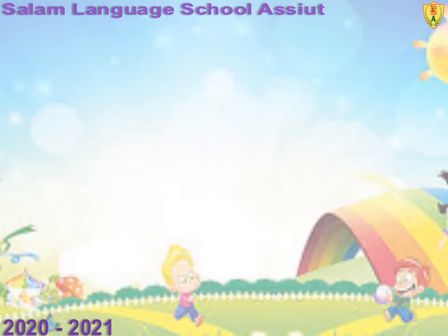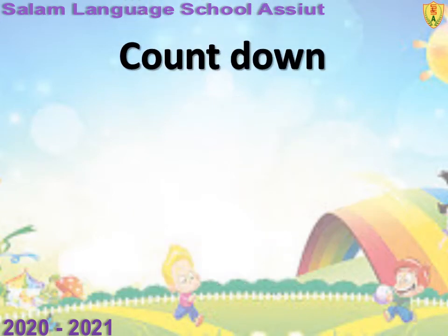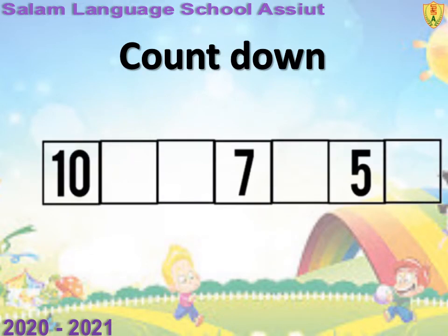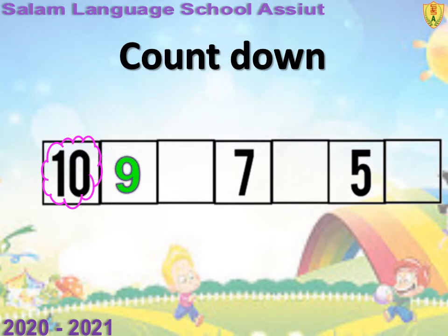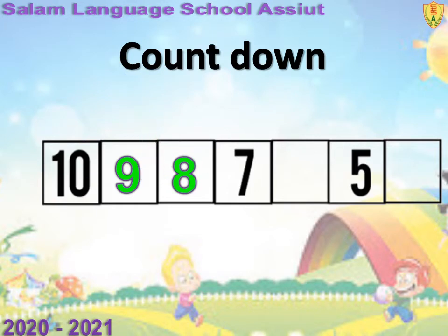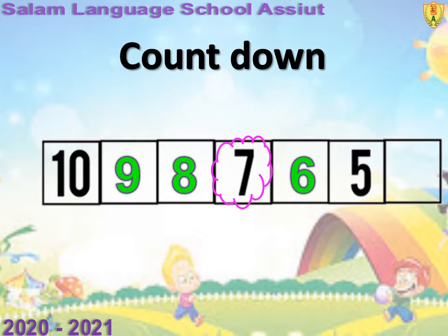عندنا أول اكسرسيز: number 10, space, number 7. معنى كده نهو استخدم الكاونت داو from the greatest number to the smallest number. Which number before 10? 9. The number before 9? 8. Number before 8? Number 7 — زي ما هو موجود عندنا. طيب إيه هو الرقم before number 7? Number 6. The number before 6? Number 5. Before 5? Number 4.